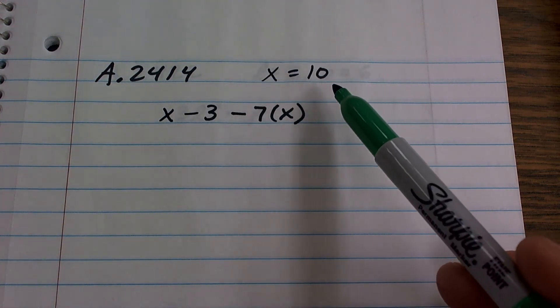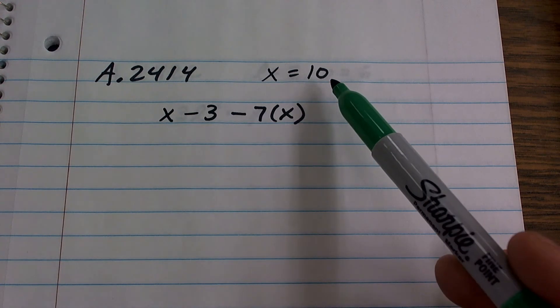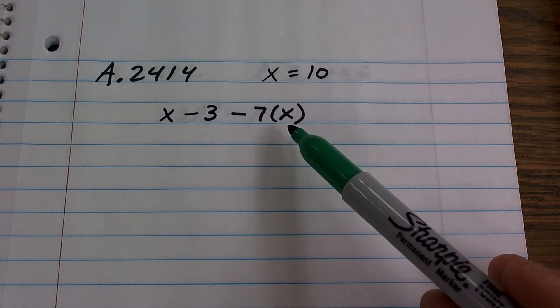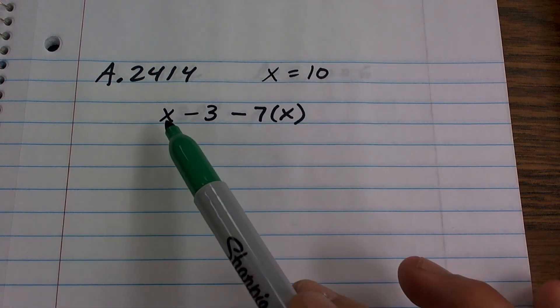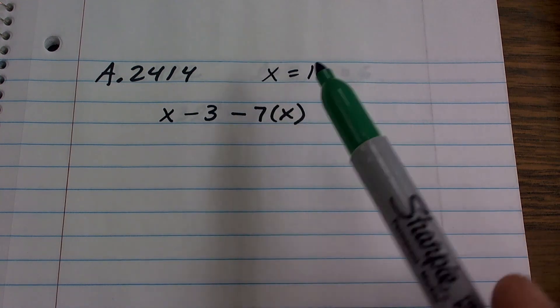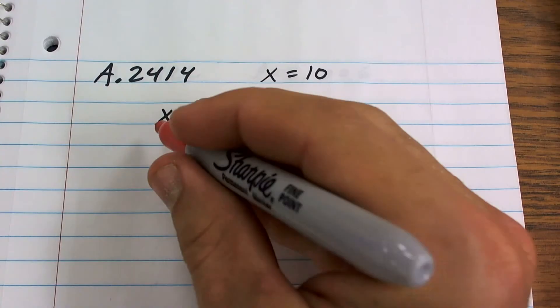And right now I'm actually going to use a little color here to show this. So what we do is now I'm going to plug in the value of 10 in for our number, because we now know the value of x. Instead of just saying I don't know what the value is, it's a number, we now know it's equal to 10.